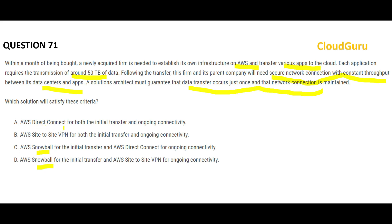The thumb rule: whenever you have a one-time data movement, think Snowball. Options with Snowball for initial transfer are the right direction. Option A uses Direct Connect for both initial and ongoing — that's wrong because for a one-time transfer you use Snowball, not Direct Connect. Similarly, using site-to-site VPN for initial transfer is wrong because Direct Connect over the network for large data is not cheap and Snowball is required for that volume.